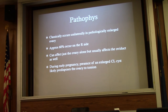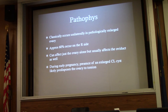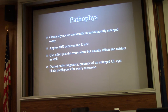Ovarian torsion usually occurs unilaterally. For the most part it occurs on the right side — the left-sided ovary has decreased movement because of the sigmoid colon on the left side. The right side is more mobile and thus more prone to torsion. This creates a diagnostic dilemma, since a lot of these patients present with right-sided pain, and you therefore have to think about the appendix as well.